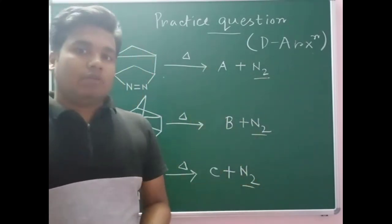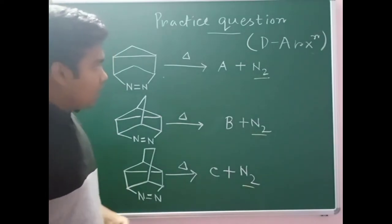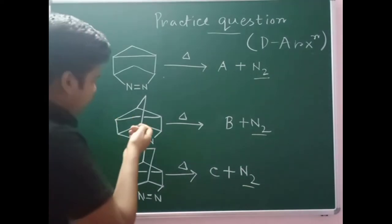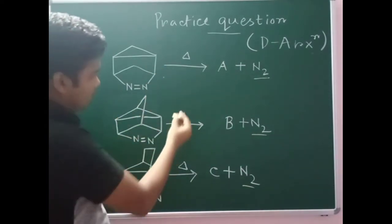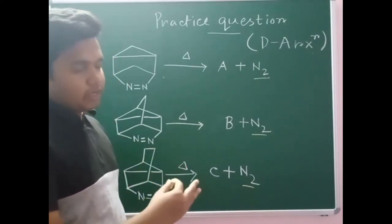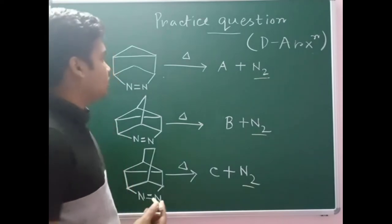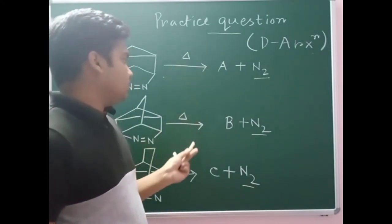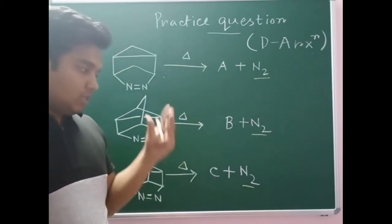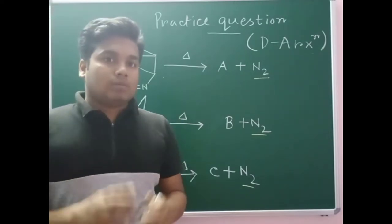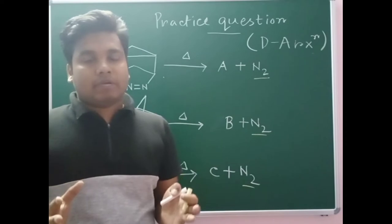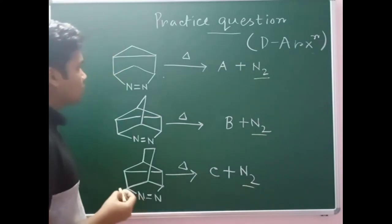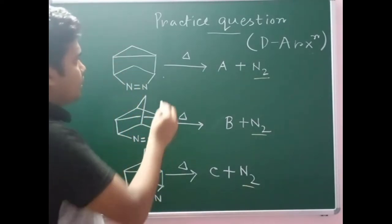The problem is from reverse homo Diels-Alder reaction. Here you can see three starting materials with heat given, meaning in heating conditions, Diels-Alder as well as retro or reverse Diels-Alder reaction can take place. In the exam, if heating condition is given and the starting materials resemble a pericyclic product, always think first about pericyclic reactions.